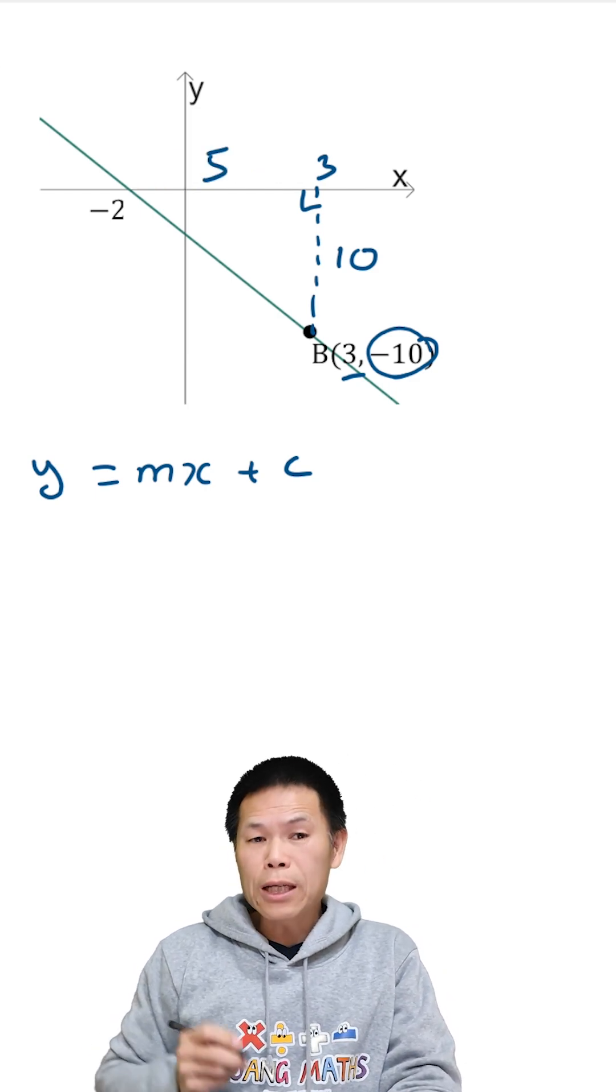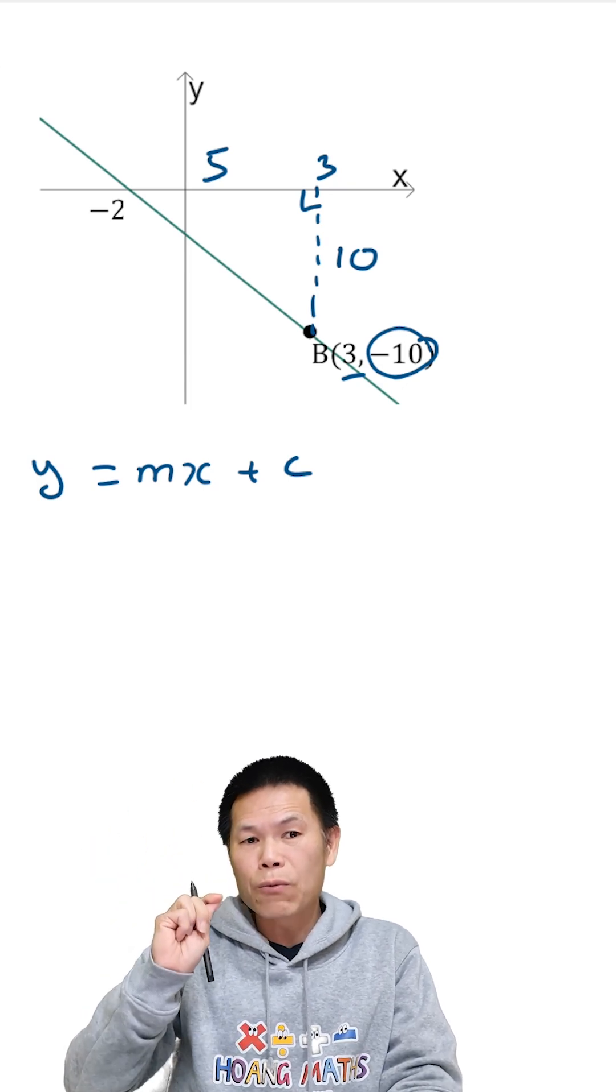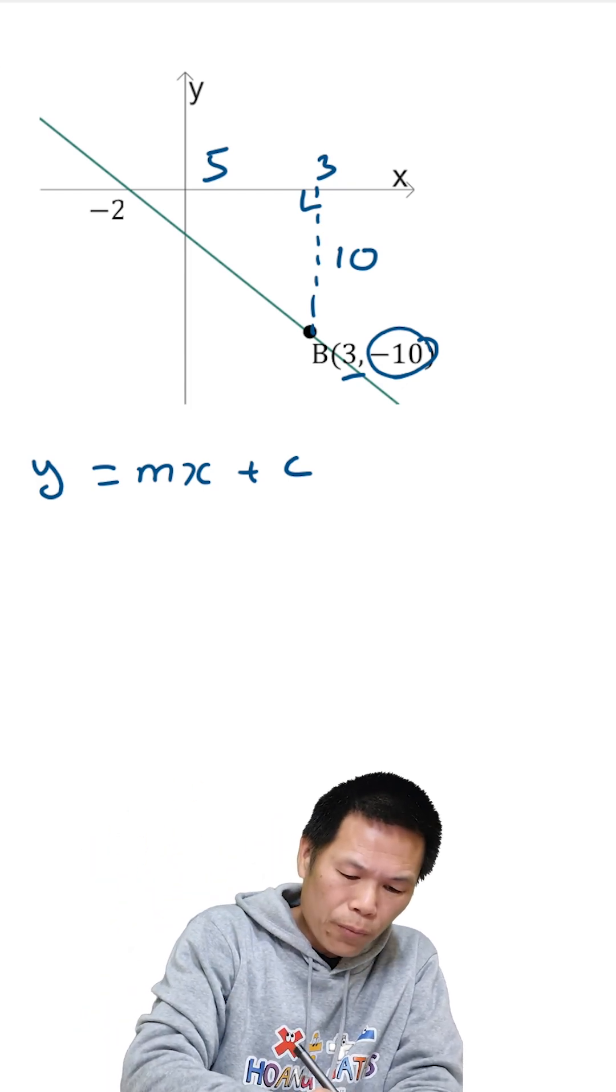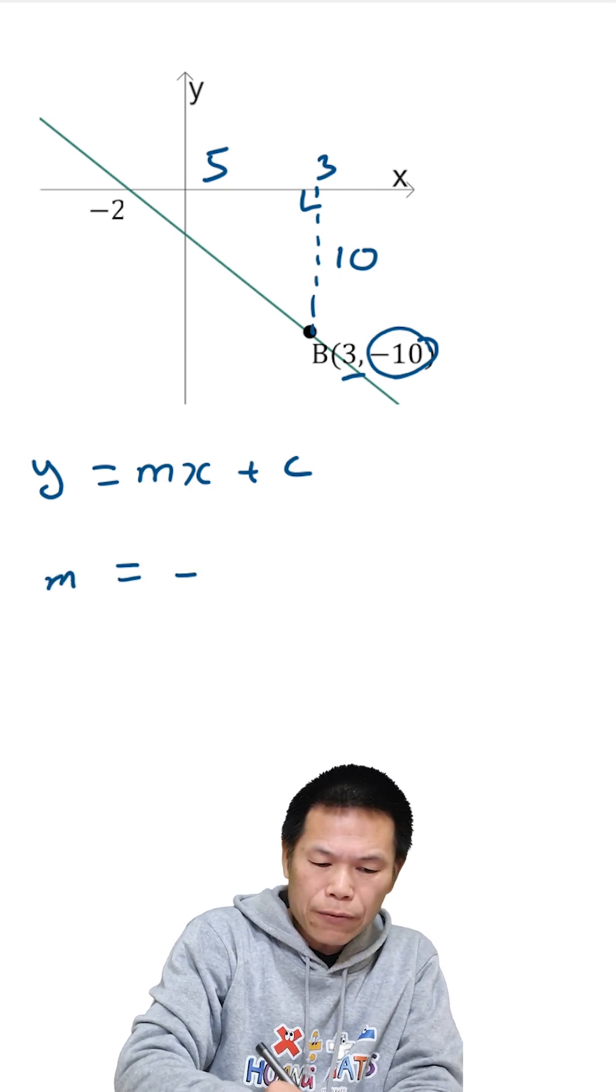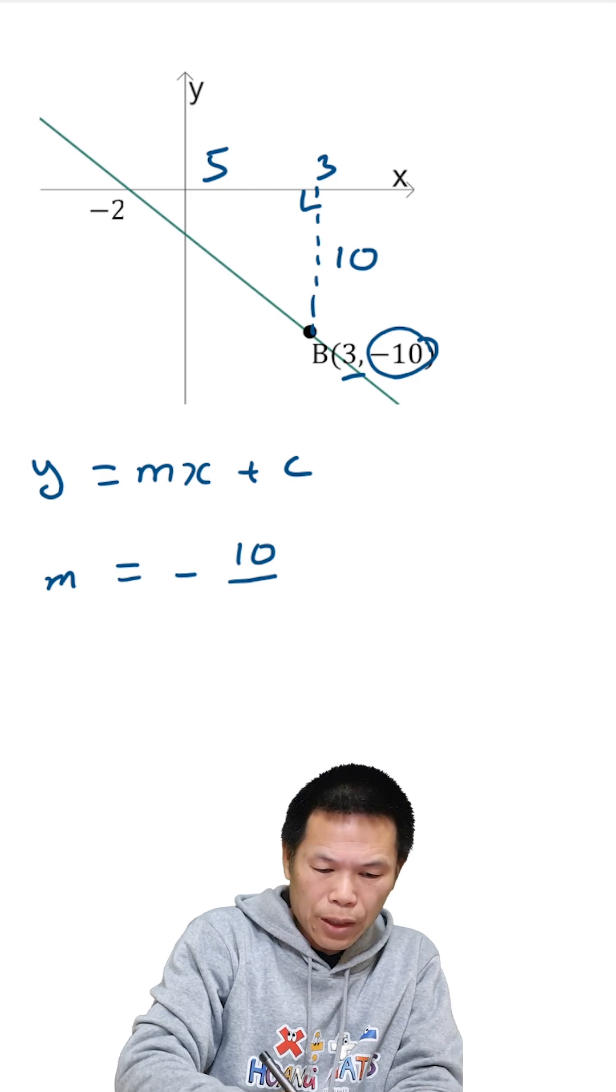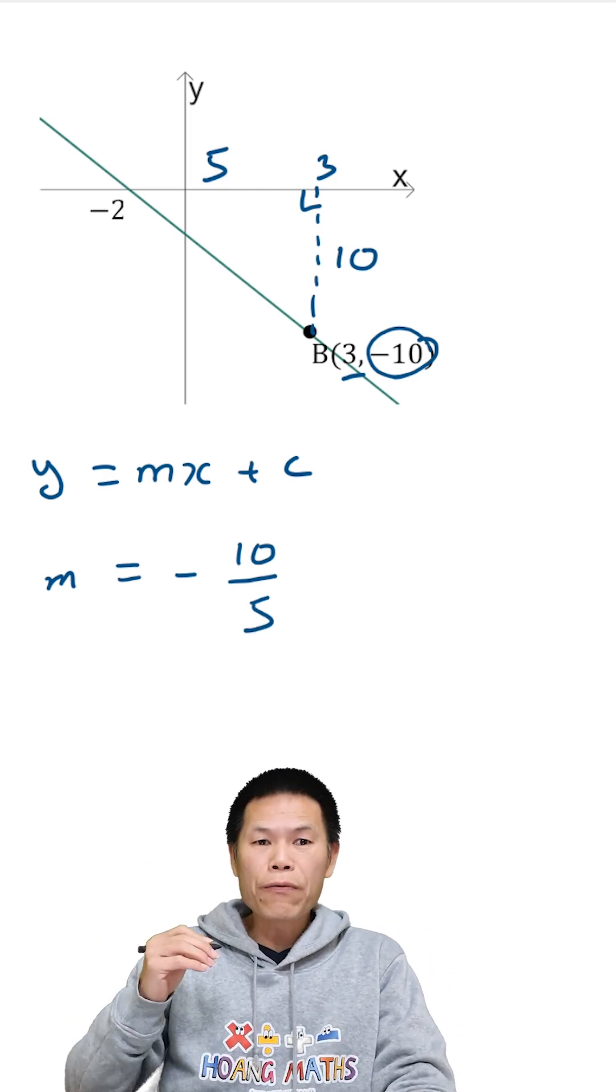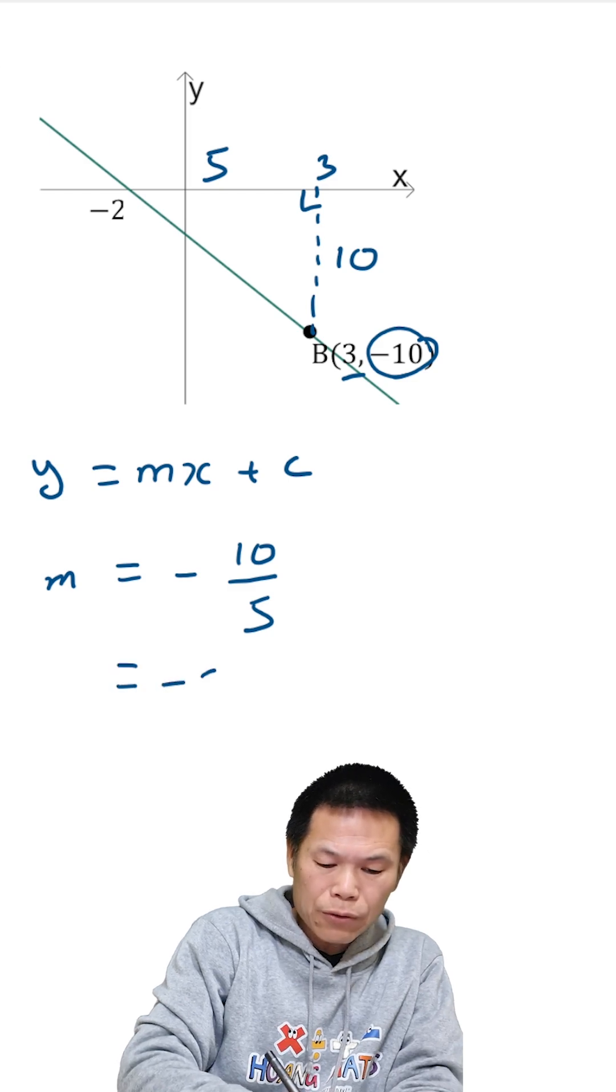So the run will be 2 plus 3 is 5, so let me clear this, so this is 5 units. And the gradient is negative because the line heading like this, so we have negative gradient. Therefore, m is negative rise is 10, run is 5, so 10 over 5 become 2, so the m is negative 2.